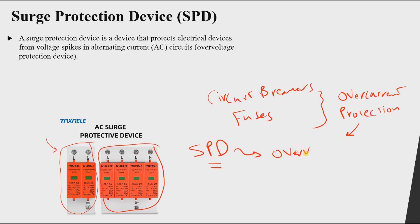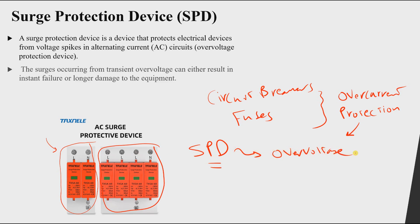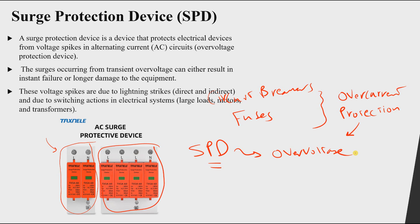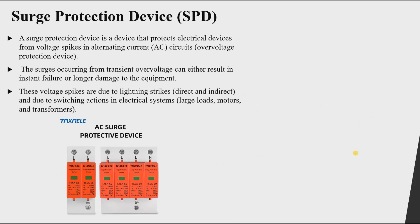The problem with transient overvoltage is that it can lead to instant failure or longer-term damage to our equipment. It can cause insulation failure in electrical equipment, so we need to protect our equipment against overvoltage.